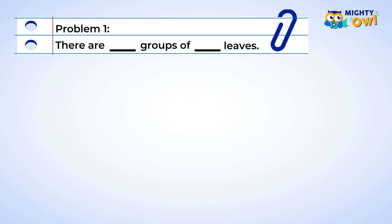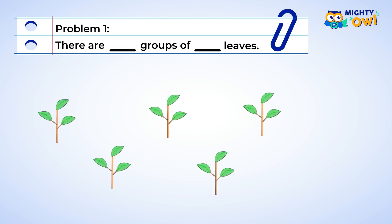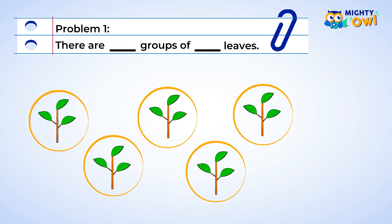Look at this example. You want to figure out how many groups of how many leaves there are. Circling the groups, you can see that there are five groups in total. You can fill in the first blank with five. Next, count how many leaves are in one of the circled groups. There are three leaves in the group. You can fill the second blank with three. So the answer is there are five groups of three leaves.